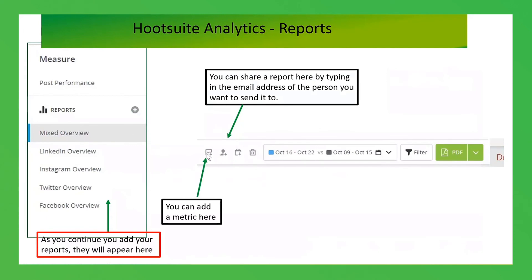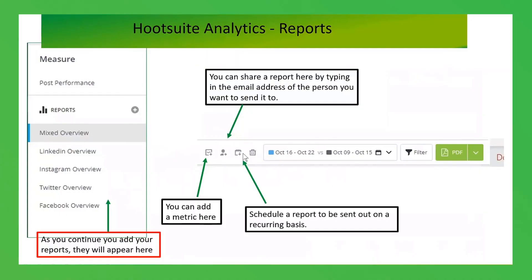If you want to add metrics or customise — for example if your Twitter overview doesn't include something you want to look at like comments, or you want to remove something — just click the plus. You can also schedule a report by clicking on the calendar and set it to send to specific people once a week, once a month, or every day if you want.